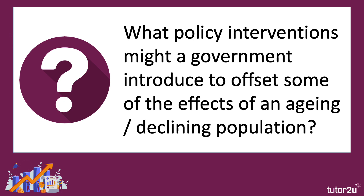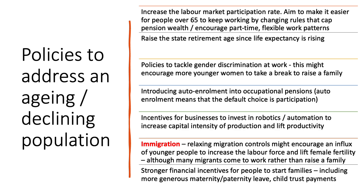Given that we are experiencing global ageing and there are significant risks associated with a rising median age, what policy strategies might a government introduce to offset some of the effects of an ageing or declining population? Different countries have tried different things. Generally, one aim is to increase the labour market participation rate of older workers, particularly people who might have otherwise retired. You might try to make it easier for people over the age of 65 to carry on working — for example, by changing the rules that cap pension wealth, or by encouraging businesses to offer part-time flexible work patterns for older people.